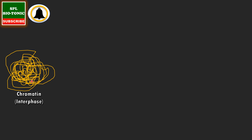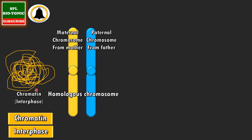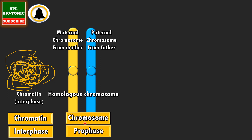Chromatin are visible during interphase. They are long, thin, thread-like structures. These chromatin, with the help of histone and non-histone proteins, start condensing to form chromosomes. So chromosomes are visible during the dividing phase. Chromatin condenses to form chromosomes, which are visible from prophase onwards, and specifically during metaphase.